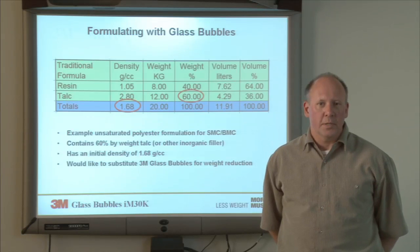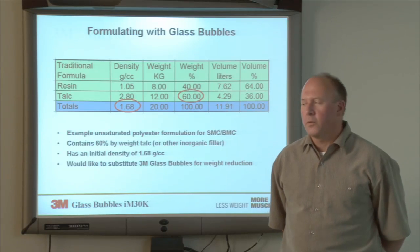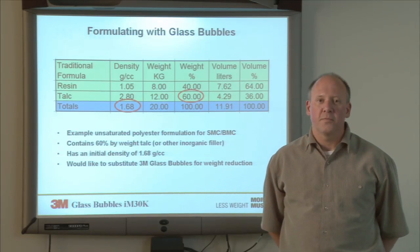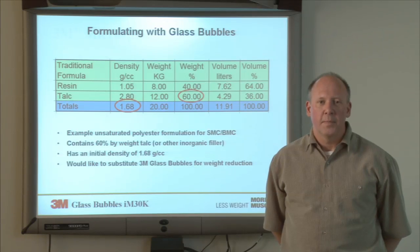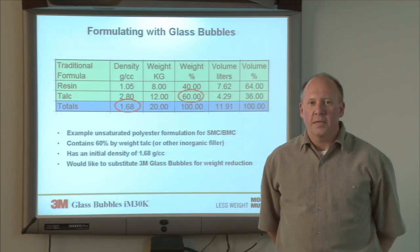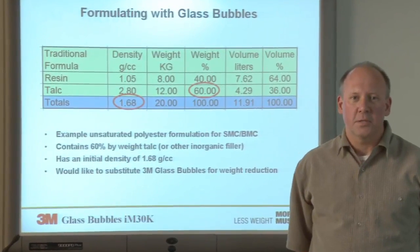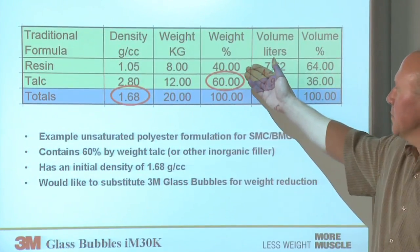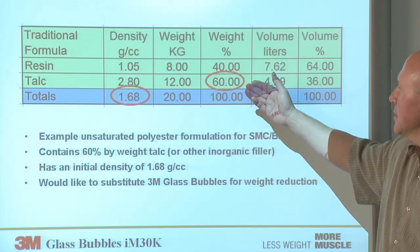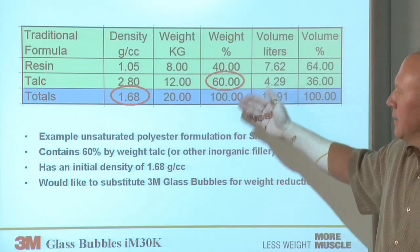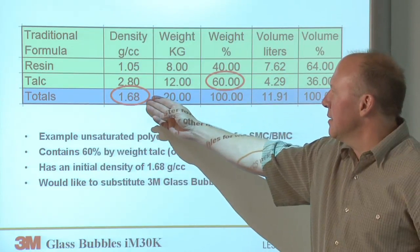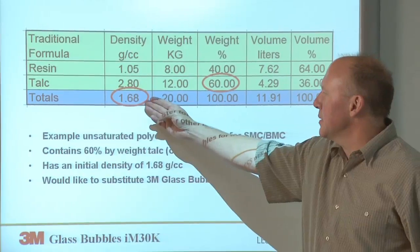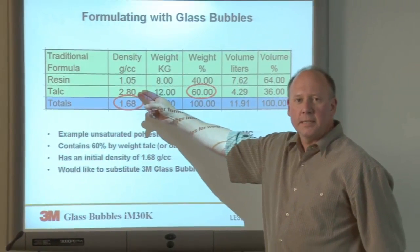We're going to go through an example here with sheet molding compound, where we're going to replace talc with a very low density glass bubble material. In the first case, we've got an initially formulated material of unsaturated polyester at 40% by weight and talc at 60% by weight. This has a very high density because the talc is very high in density.